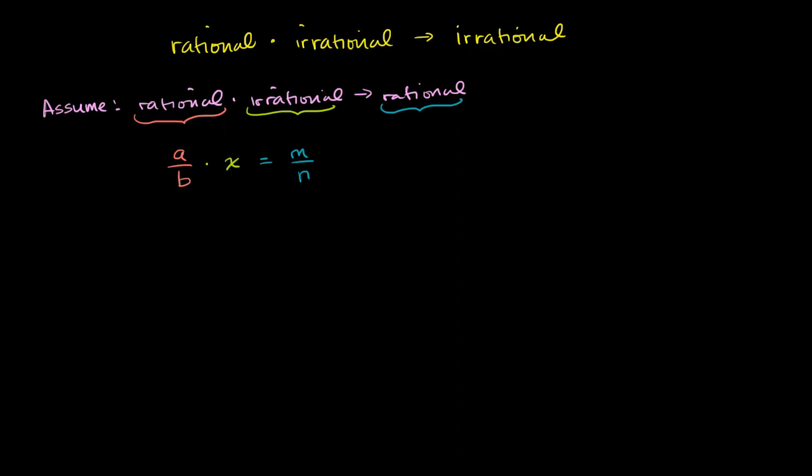The best way to solve is to multiply both sides times the reciprocal of this number right over here. So multiply both sides times b over a. And what are we left with?